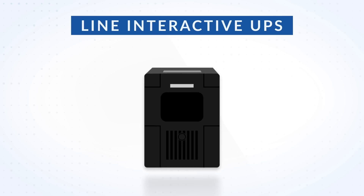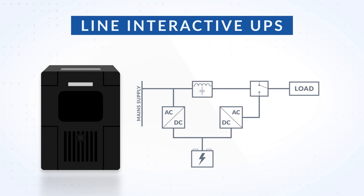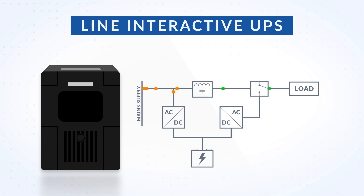The Line Interactive UPS is a modification of the Offline UPS. It has an automatic voltage regulator that senses fluctuations and stabilizes the output power. As a result, battery life is prolonged and the power that goes to the load is processed. If the mains power is too low, then it switches to the batteries.